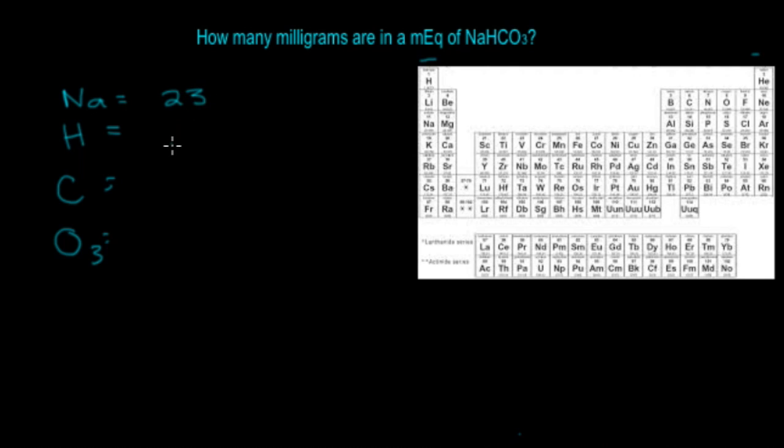The mass of hydrogen is 1, carbon is 12, and oxygen is 16. Multiply that by 3, and that gives you 48.